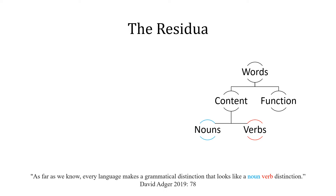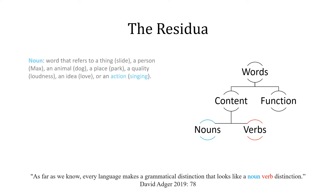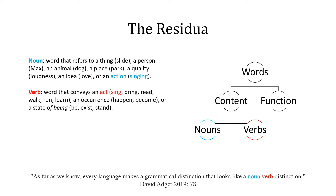A noun is a word that refers to a thing, a person, an animal, a place, a quality, an idea, or an action itself. And a verb is a word that conveys an action, an occurrence, or a state of being.